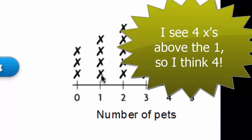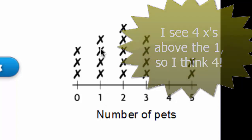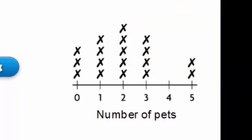That's right. One, two, three, four. There were four students who have one pet. What number of pets do no students have?